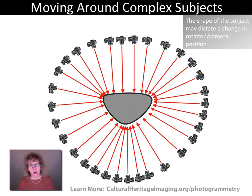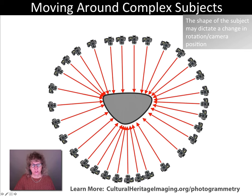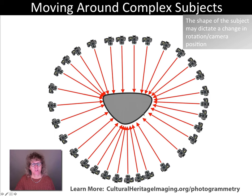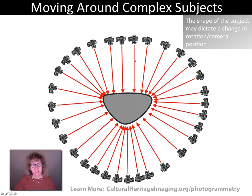Not everything is perfectly round, so how do we deal with more complex subjects that have flat areas and corners or tighter areas? On a flatter area of the surface, we move the camera with a two-thirds overlap. But when we get close to a tight edge, we start moving the camera in 10 to 15-degree increments — no more than 15 degrees — so the software can match images as you go around. Then where it's flat again, go back to two-thirds overlap, moving the camera one-third of the horizontal field of view. You can also use this technique for a cliff face or around a building, making sure your camera follows the contours and shapes of the subject.